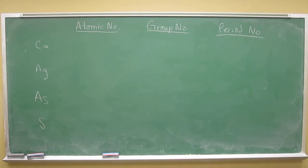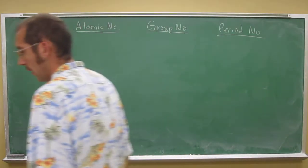So let's do this problem now. It asks, what's the atomic number, the group number, and the period number for each of these elements?